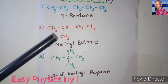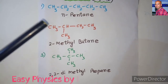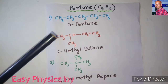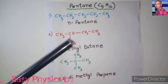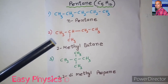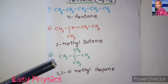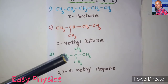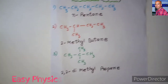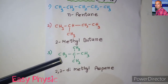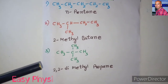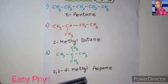The same C5H12 can also be arranged with one methyl group attached to the second carbon. Counting the carbons gives the same 5, and hydrogens the same 12. This compound is called 2-methylbutane. In the third arrangement, there are two methyl groups attached to the second carbon. Here also we have 5 carbon atoms and 12 hydrogens. This compound is called 2,2-dimethylpropane.